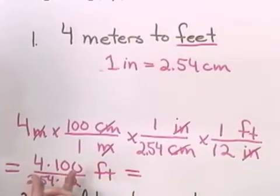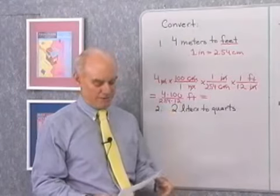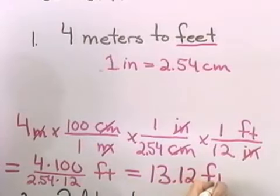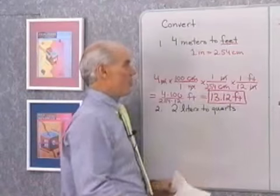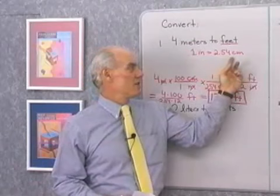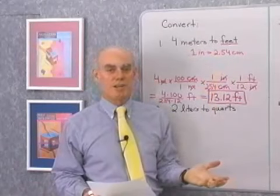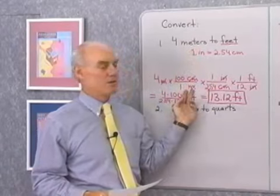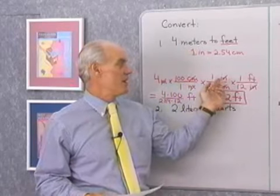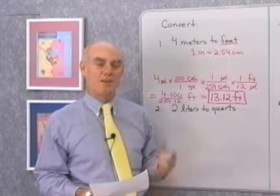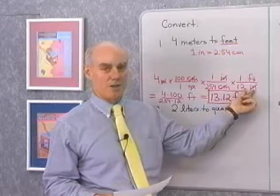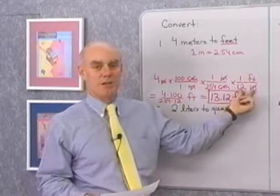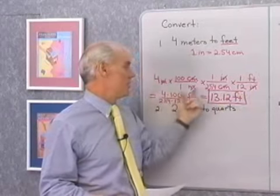If I do this arithmetic — 4 times 100 divided by 2.54 times 12 — that comes out to 13.12 feet. So you see, if I have just this one conversion factor that goes between inches and centimeters, that allows me to convert any units of length. Even starting with meters, I can go from meters to centimeters, then between the two systems from centimeters to inches, and from inches to any unit of length in the U.S. system — in this case, feet.